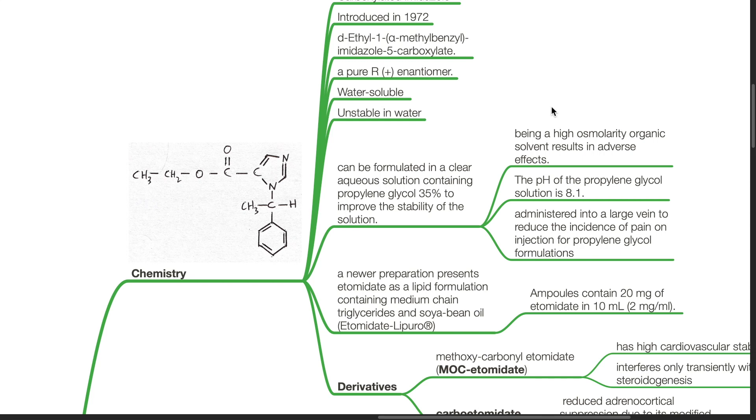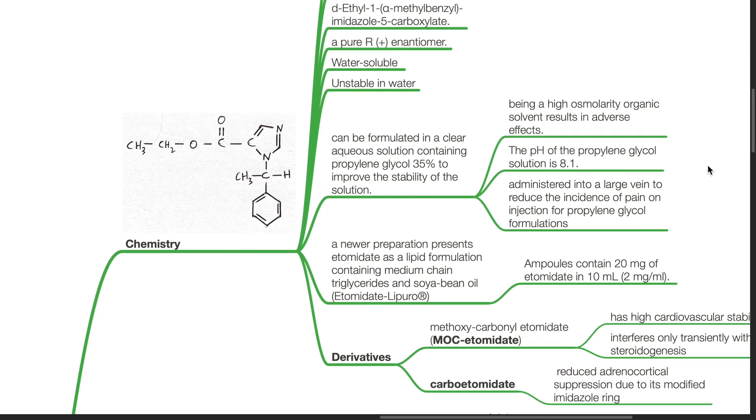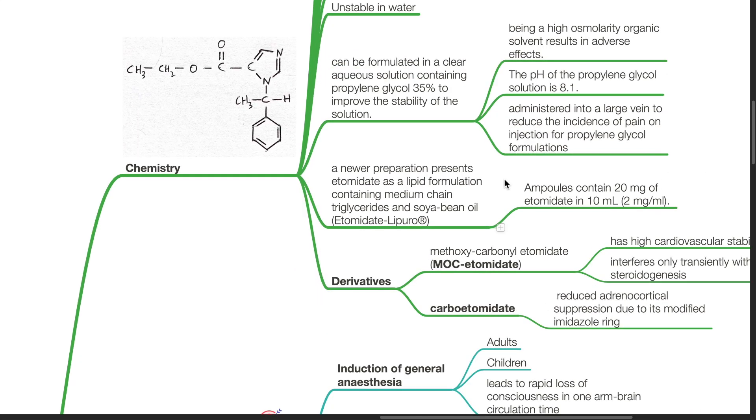Being a high-osmolarity organic solvent, this results in adverse effects. The pH of the propylene glycol solution is 8.1 and it should be administered in a large vein to reduce the incidence of pain on injection. A newer preparation presents etomidate as a lipid formulation containing medium-chain triglycerides and soybean oil known as etomidate lipuro.